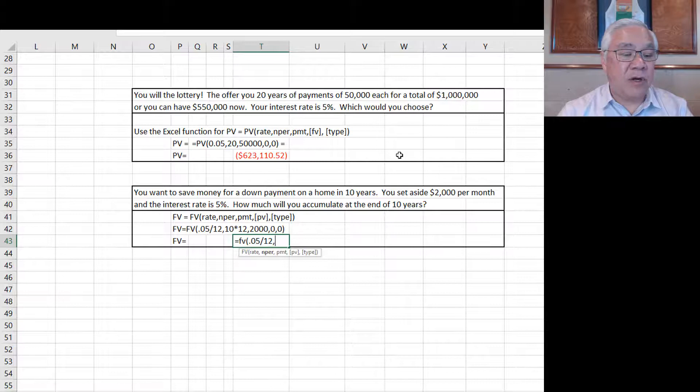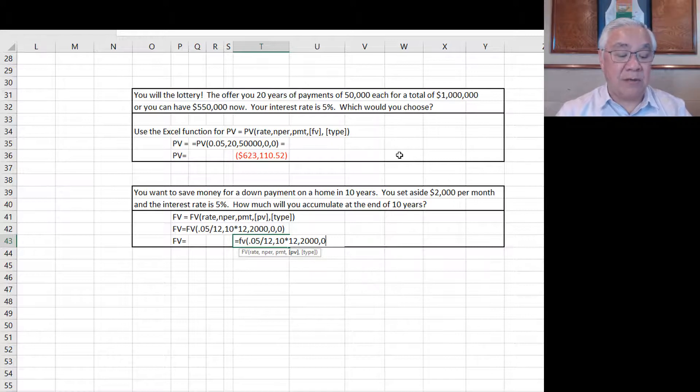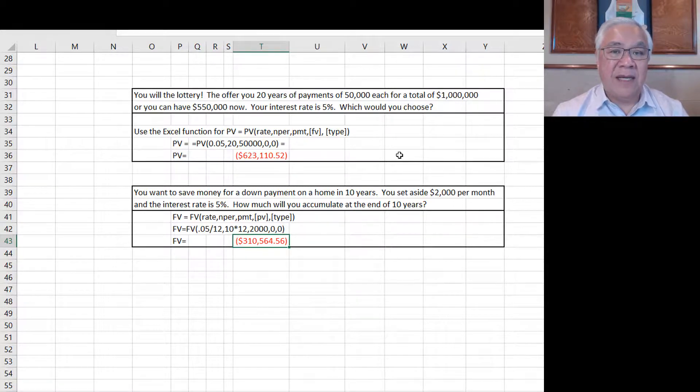Next, number of periods. We're each year we're going to do 12 payments. So we're going to do 120 payments during the period of time. Then what is the payment? We're going to set aside $2,000 per month. We're not putting any additional money in today. So that's 0. Close parens and enter. So that means that in 10 years, we would accumulate $310,564 toward our down payment on the house. Right. So that's how we solve it. The first is the present value of an annuity for the lottery. The second is the future value of an annuity. In this case, your savings at the end point of 10 years.